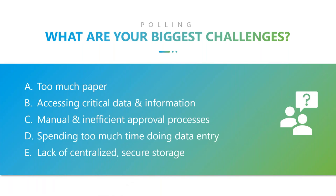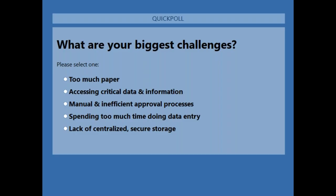Let's take a quick poll — I find these pretty fun. We'd like to give some thought to what are your biggest challenges working in the office or remote, and what are those bottlenecks. You can select more than one of the five options. It looks like a lot of people have too much paper at the top of the list, along with manual and inefficient approval processes, and spending too much time on data entry.